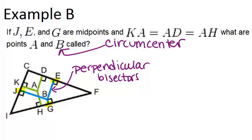Now let's look at K, D, and H, and the point they intersect in sort of is A. So A looks to be equidistant from all three sides of the triangle. And I know that because in the problem it says KA equals AD equals AH.